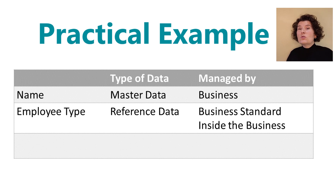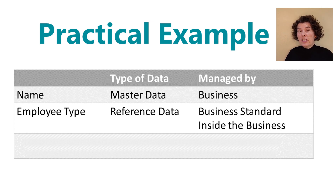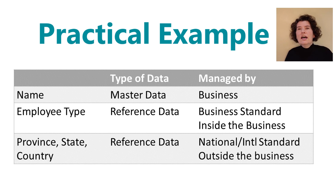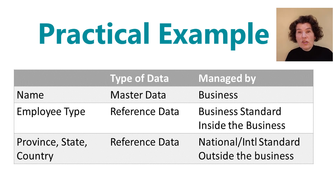That same list of employees will contain information about the employee's address. Employee addresses will contain information about province, state, region, and country. But the company doesn't define the list of valid country codes — these are defined by national and international standards. This is reference data managed outside the business, a set of codes used to classify and group the business entity, where many entities share the same code.